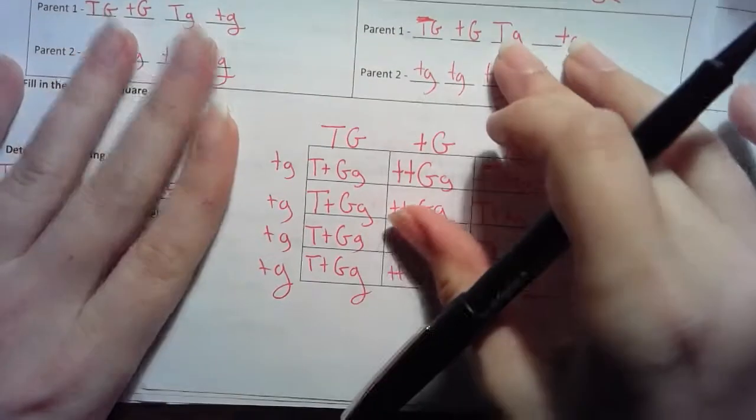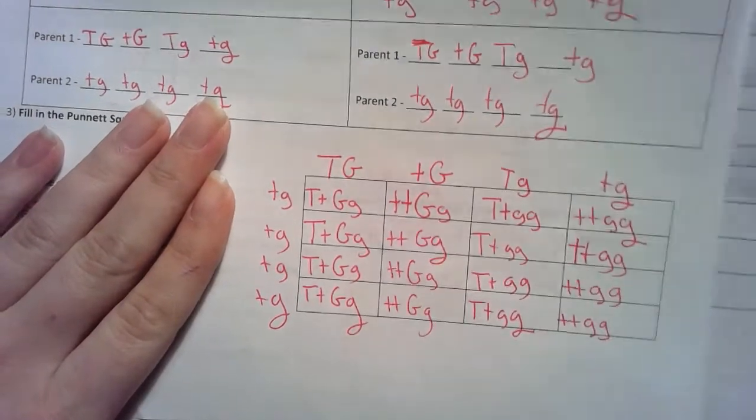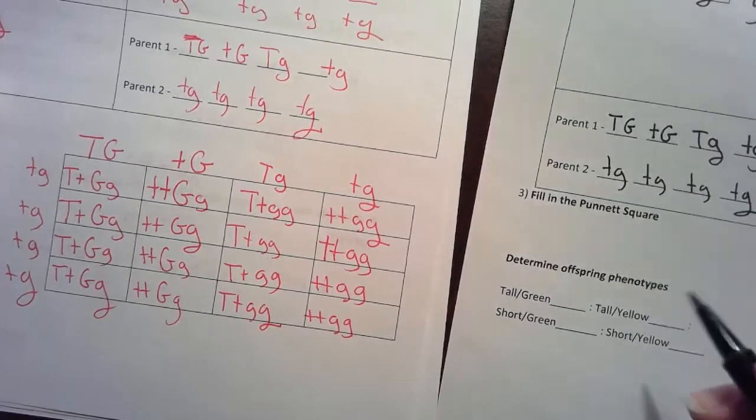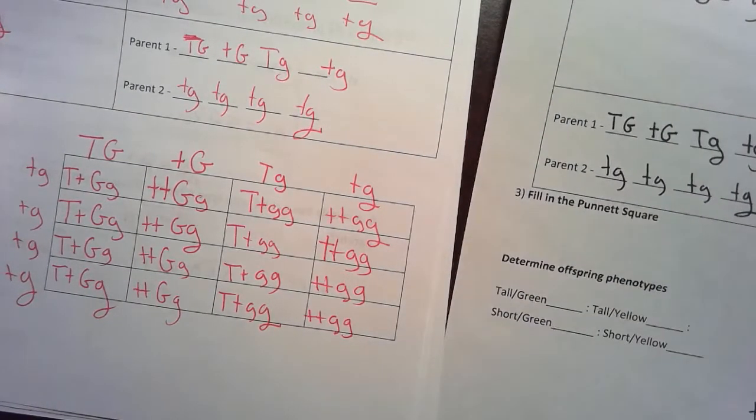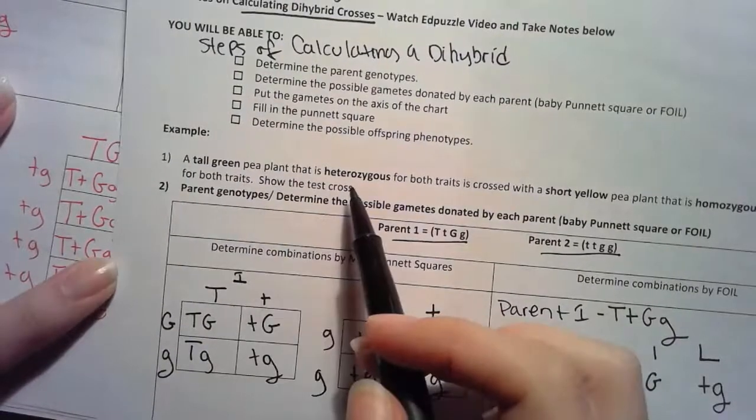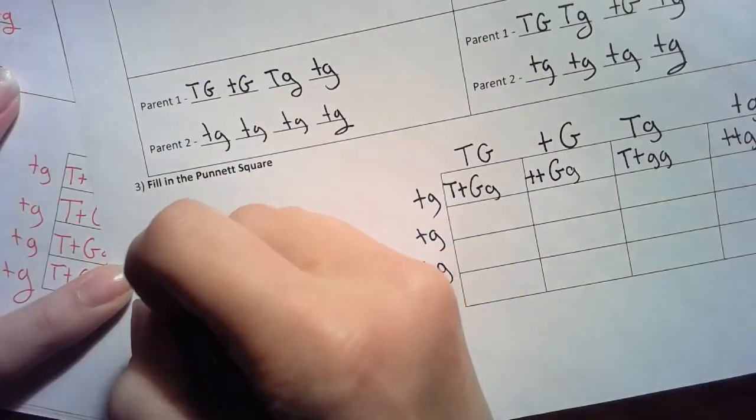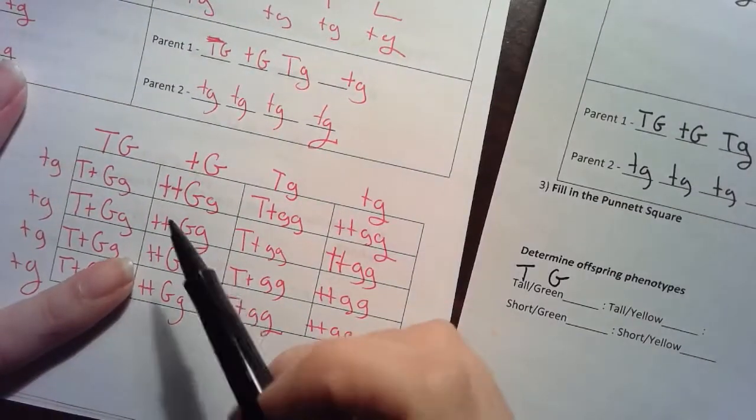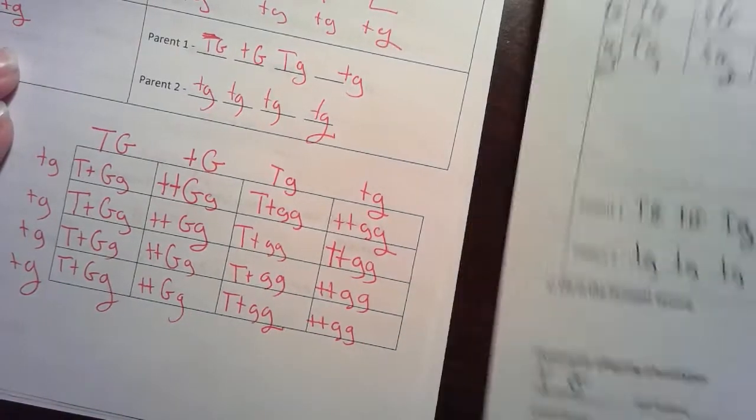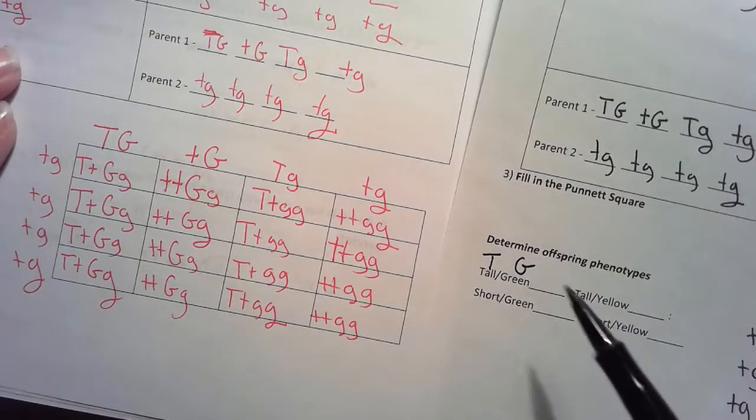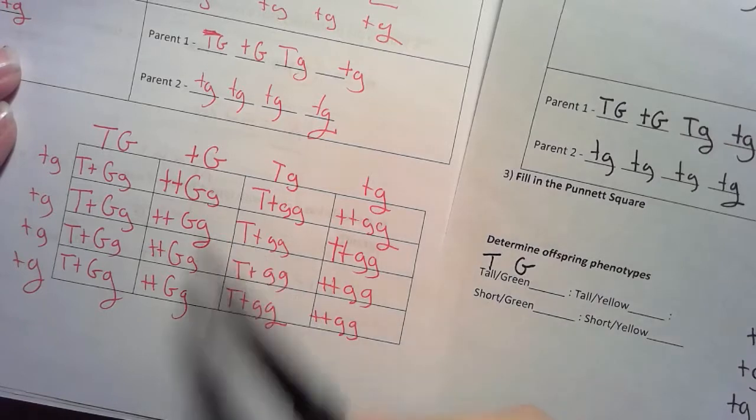This was my filled in Punnett square. What I need to do now is determine what are all of my phenotypes. I've had tall and green. Notice in my problem it told me tall and green was heterozygous, that means the tall was dominant and the green was dominant. In order for something to show if it's dominant, I only need one capital letter. So if I look in my completed Punnett square, when I'm looking at all of my genotypes I need to make sure that in order for it to be tall and green it has at least one capital T and one capital G.